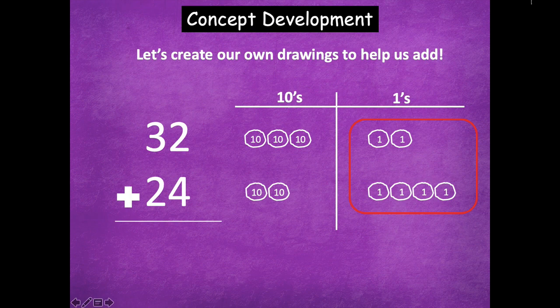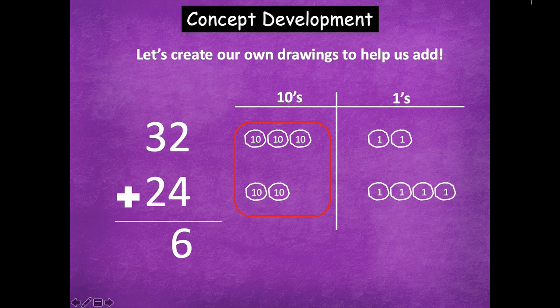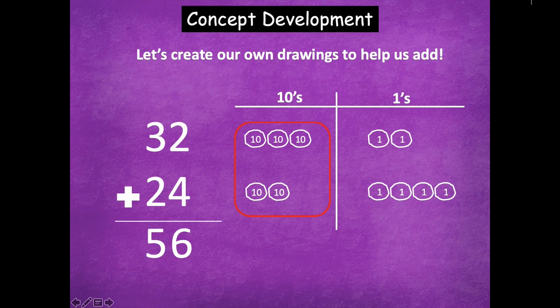So two ones plus four ones is how many ones, friends? Six. So I can model that in my vertical form. Now I'm going to add my tens next, which I have three tens plus two tens equals how many tens? Five tens. So 32 plus 24 equals 56.